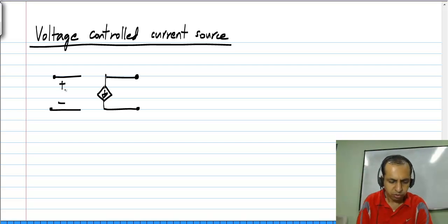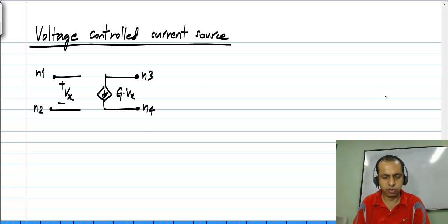And also we have to have controlling nodes. What this says is if the voltage between let us say N1 and N2 is Vx, that will cause a current some g times Vx to flow from N3 to N4.